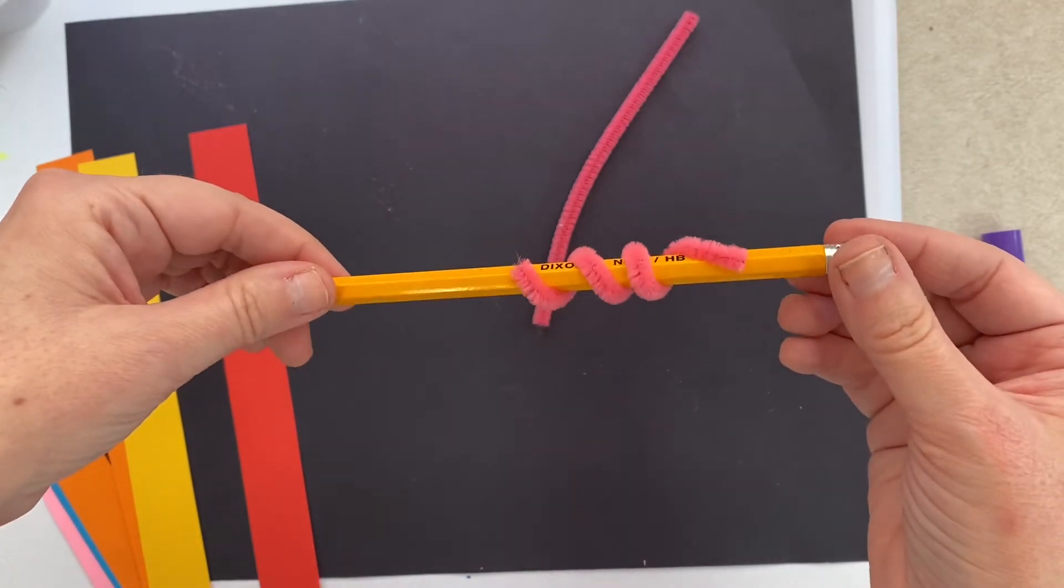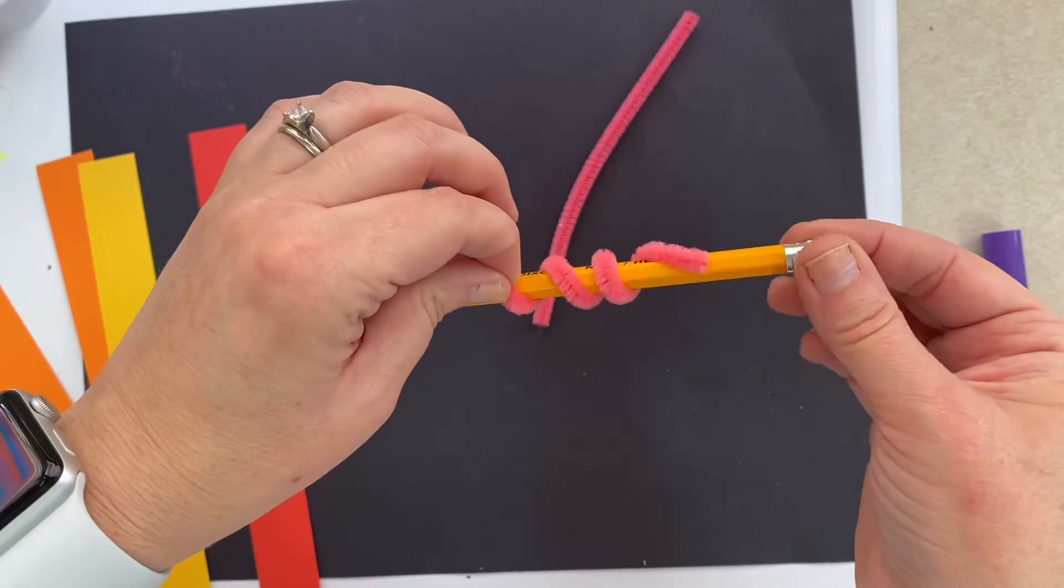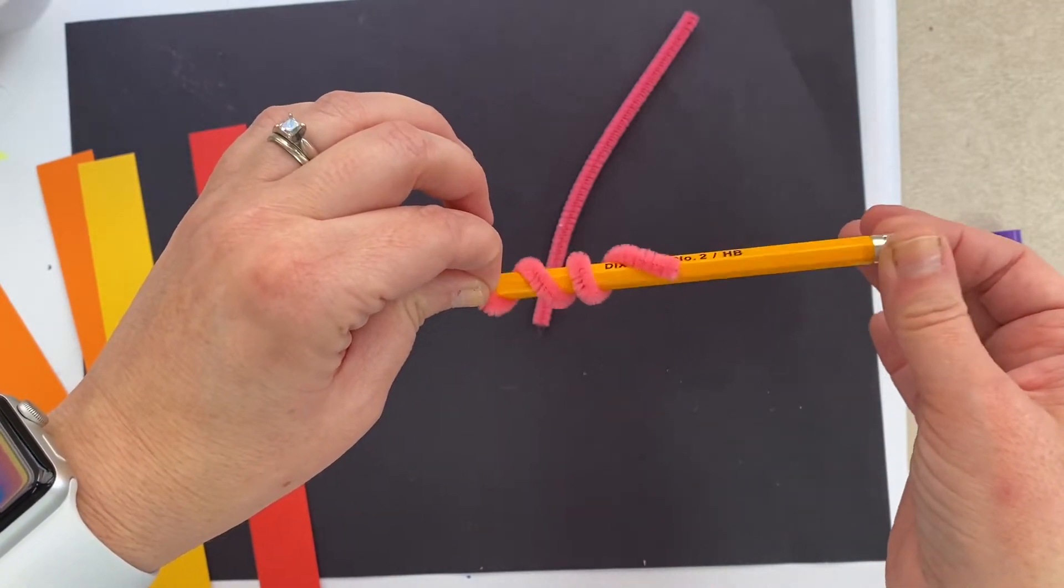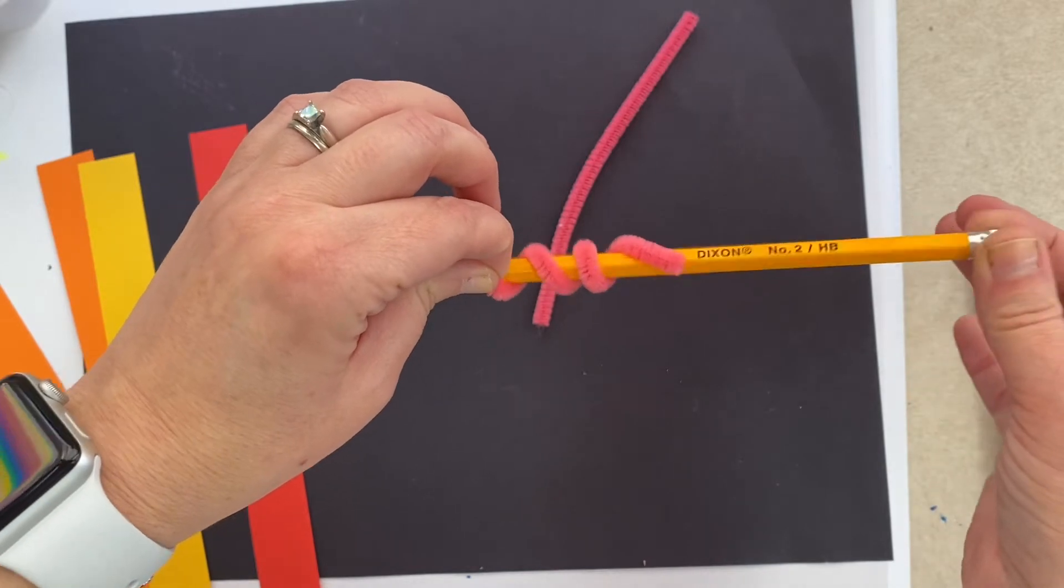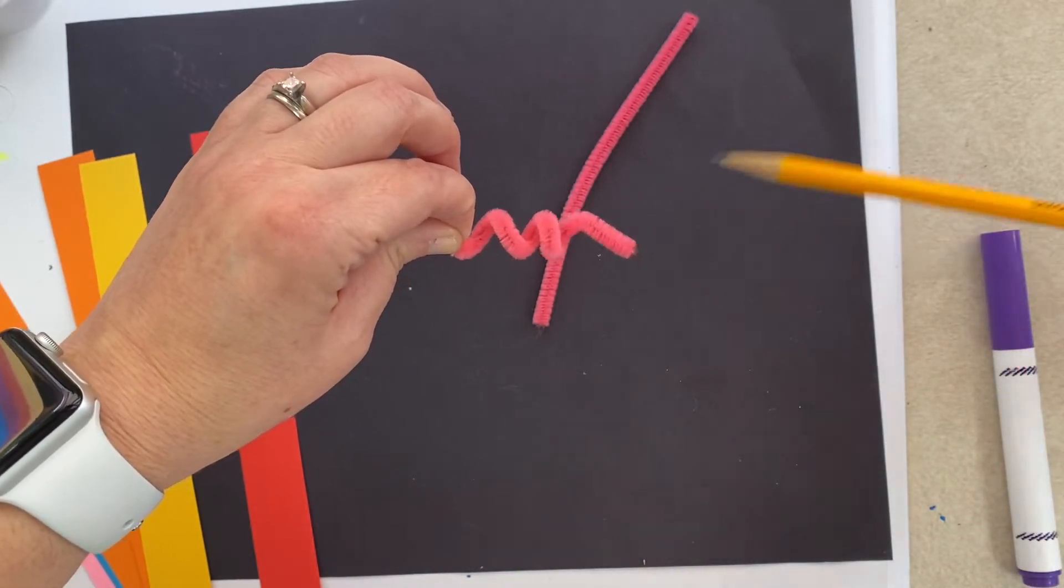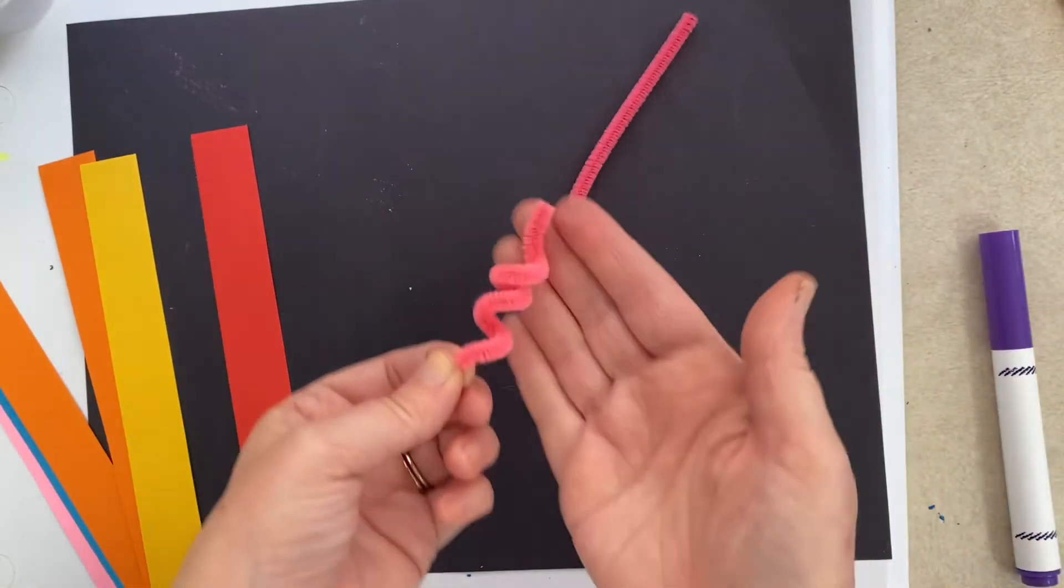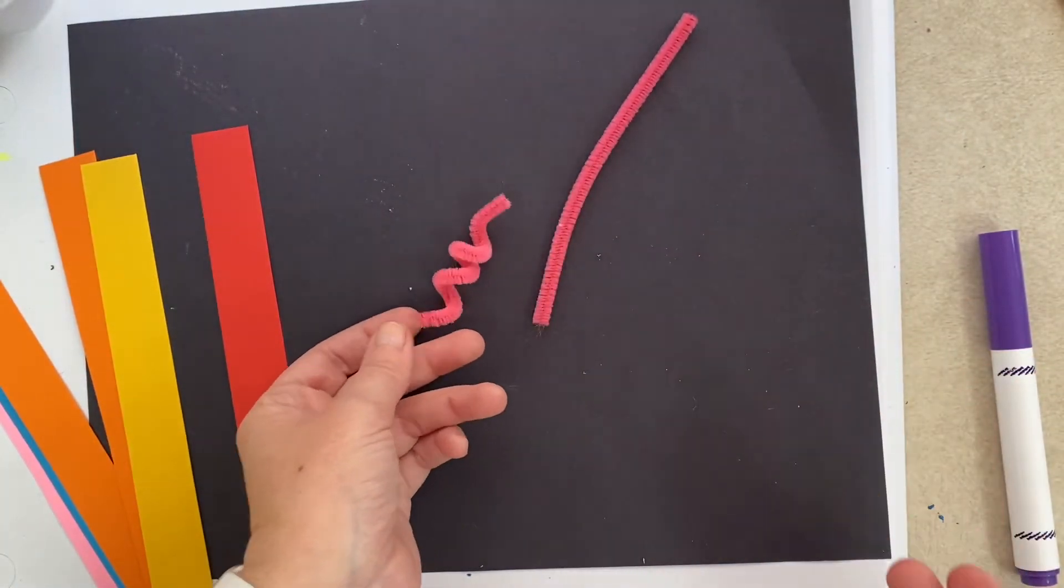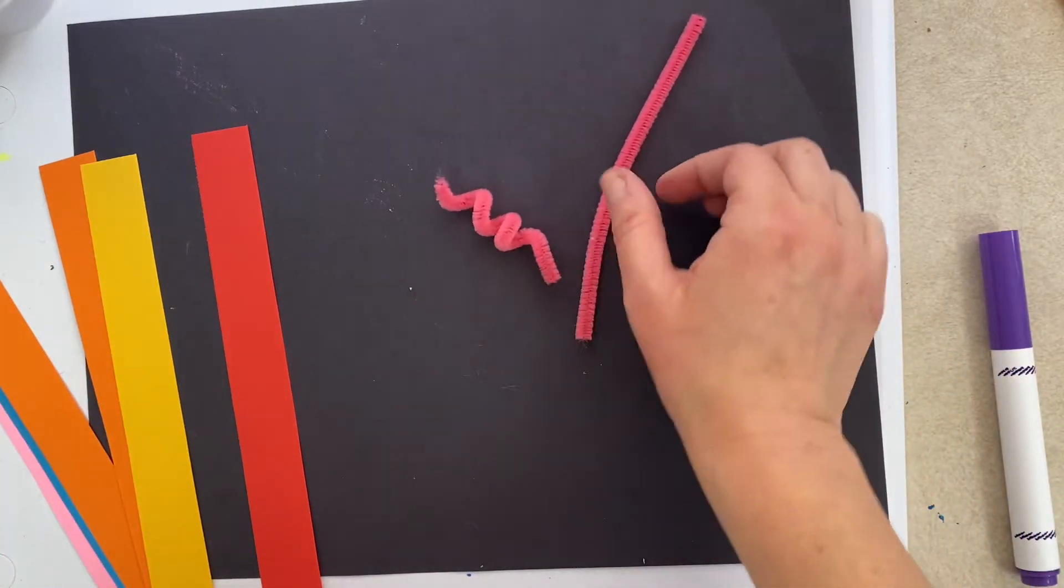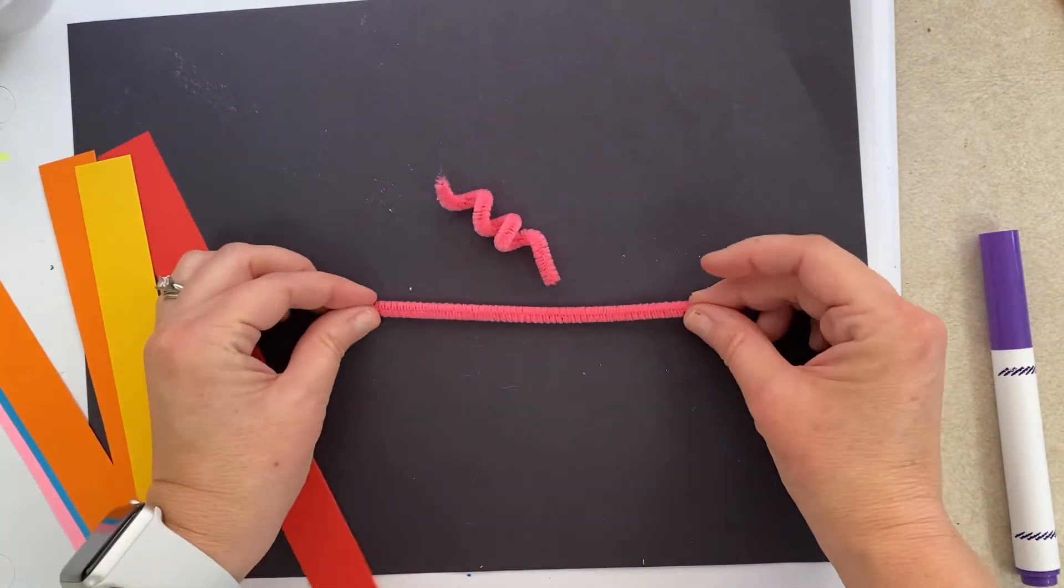Now watch this magic trick. You're going to grab one end of the pipe cleaner, wiggle, wiggle, wiggle and pull your pencil out. Keep wiggling and pulling until your pencil is out. Watch what happens—your pipe cleaner keeps the shape of a spiral line. Look how cool! We had a straight line with our pipe cleaner first and then we turned it into a spiral line. Awesome.